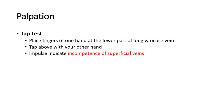The tap test is performed by placing the fingers of one hand at the lower part of the varicose vein, then tapping above the varicose vein with the other hand. If an impulse is felt at the lower hand, it indicates incompetence of the superficial veins.